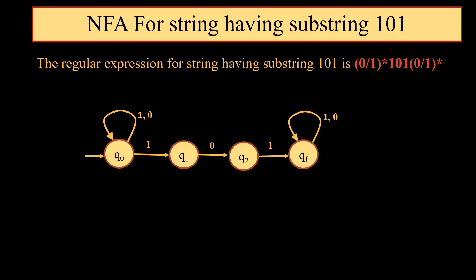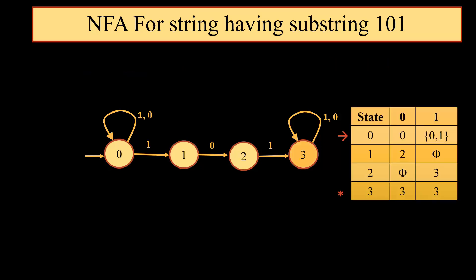Now, corresponding to the regular expression we have the NFA in which the start state is q0 and the final state is qf, and we have a loop of 0 and 1 on q0 as well as on qf. In order to ease the job, instead of q0, q1, q2 we have given the state numbers 0, 1, 2, and 3. Here 3 is the final state, 0 is the start state, and sigma is {0, 1}. So we have drawn the table corresponding to the given NFA.